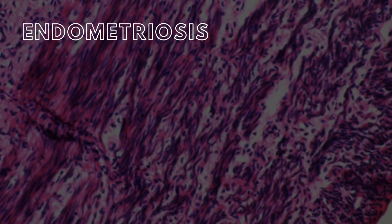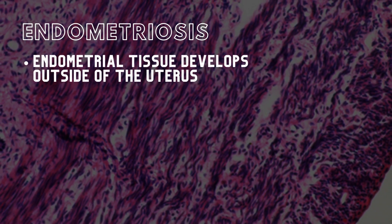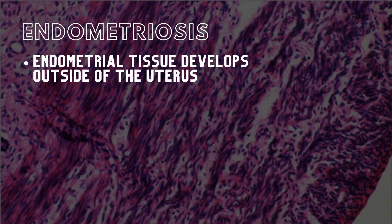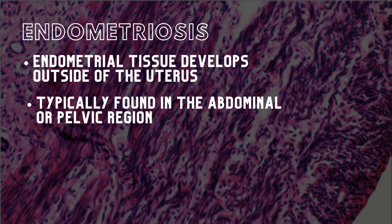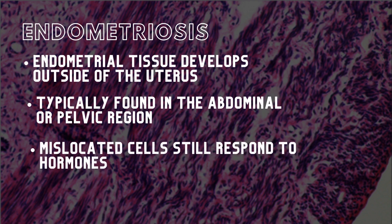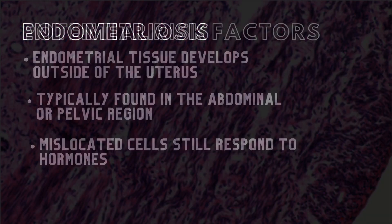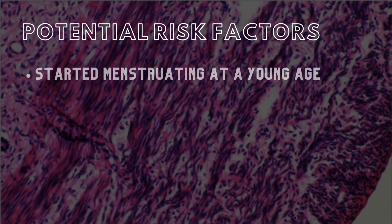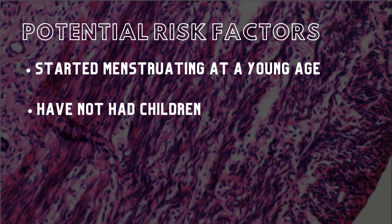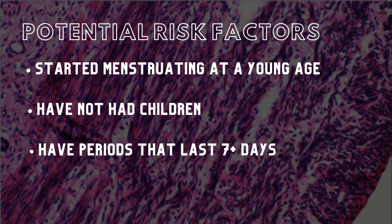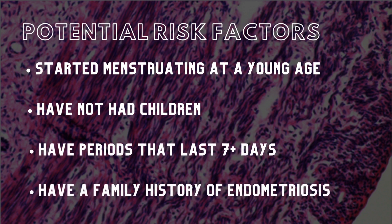Endometriosis may occur when tissue, such as the endometrium of the uterus, develops abnormally in other locations throughout the body. Typically, these growths will occur on other organs within the abdominal or pelvic regions. The mislocated cells are still sensitive to female hormones and can become inflamed during the menstrual cycle. Women who develop endometriosis typically started menstruating at a young age, have not had any children, have periods that last seven or more days, or have a family history of endometriosis.